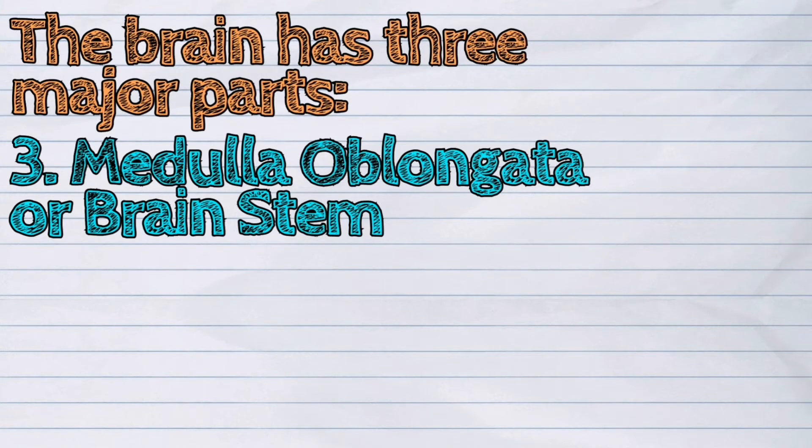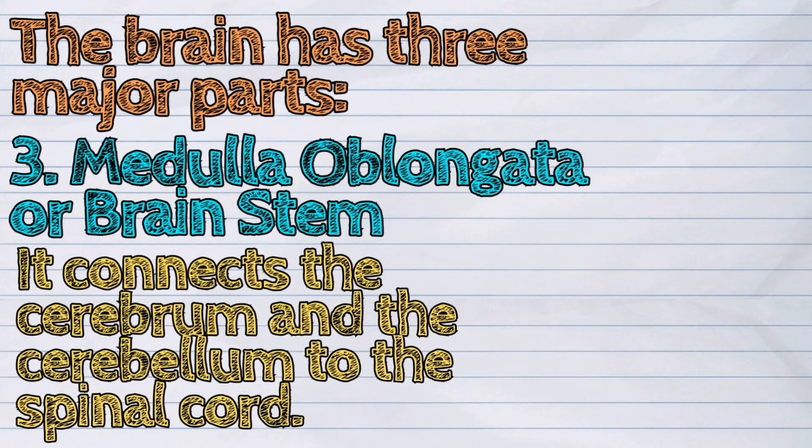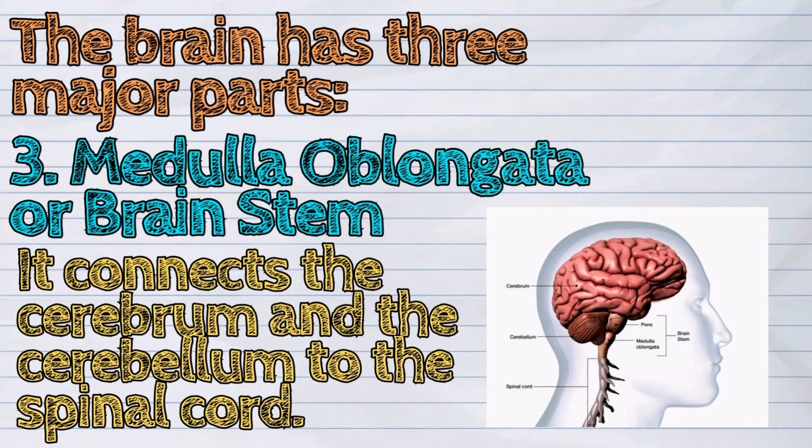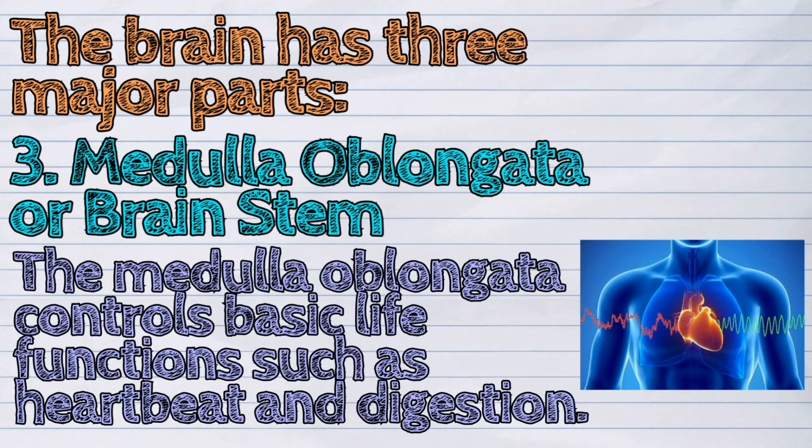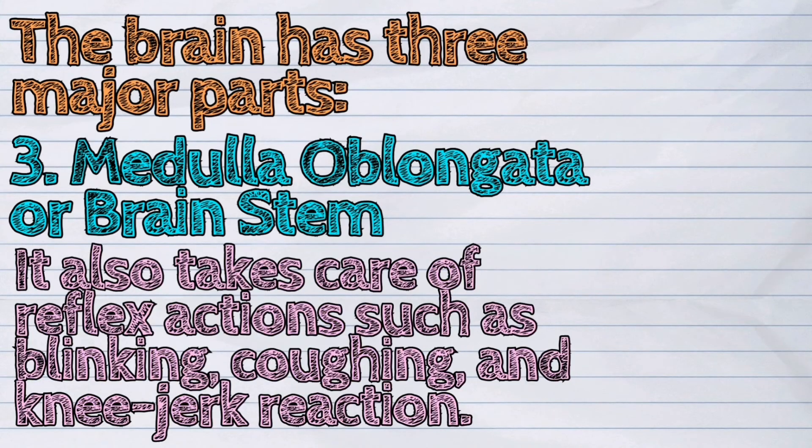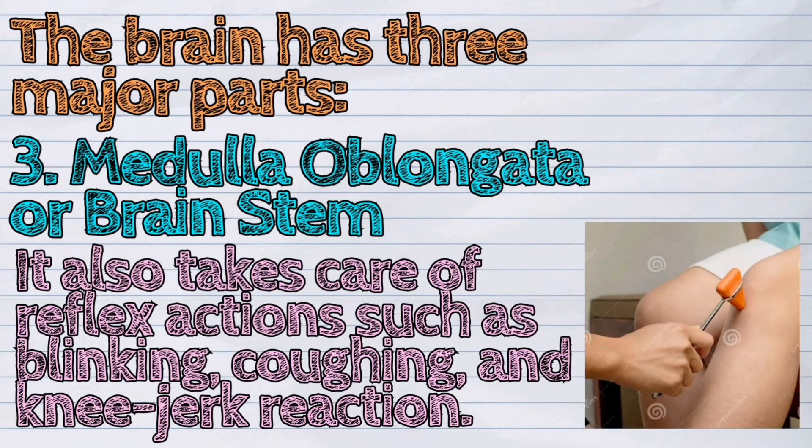And the third one is the medulla oblongata or brain stem. It is found at the base of your brain. It connects the cerebrum and the cerebellum to the spinal cord. The medulla oblongata controls basic life functions such as heartbeat and digestion. It also takes care of reflex actions such as blinking, coughing, and knee-jerk reaction.